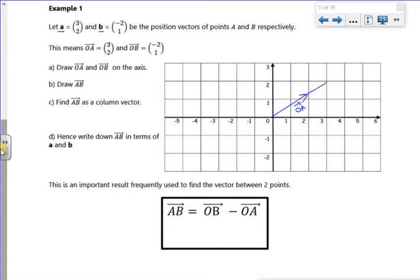B goes minus 2, 1. So it goes 2 to the left and 1 up. So that's O to B.